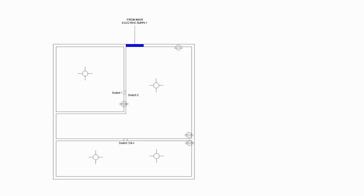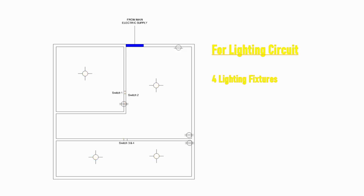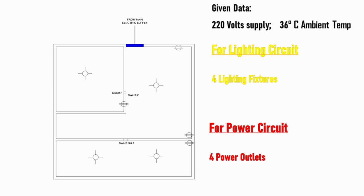Let's go through an example. We will have a lighting circuit and a power circuit. For the lighting circuit, we have 4 lighting fixtures. For the power circuit, we will have 4 power outlets. Given data: 220 volts supply and 36 degrees Celsius ambient temperature.